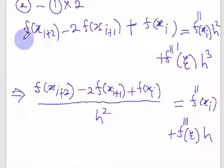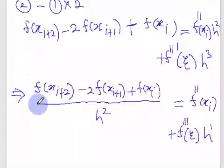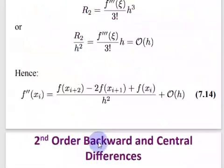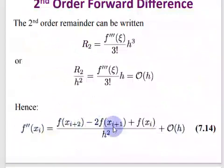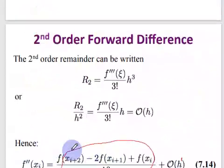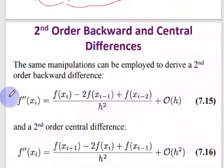To get the approximation, divide the entire equation by h squared. The result is our approximation to the second derivative at xi, and the order of the error is h to the power one — first order. Similarly, for the backward finite difference second order, you get an analogous expression.